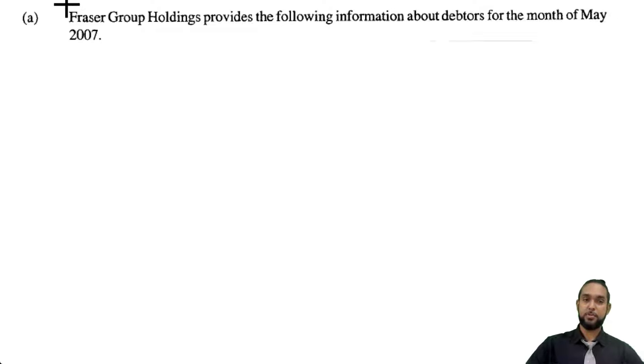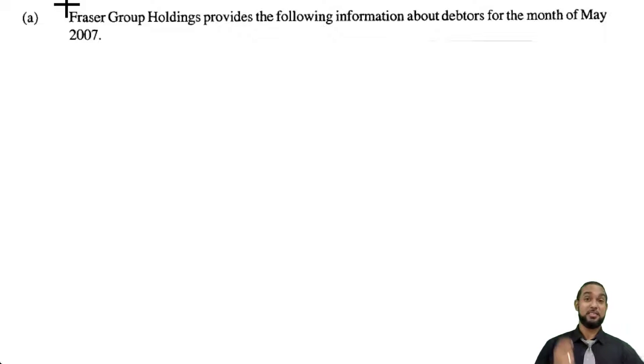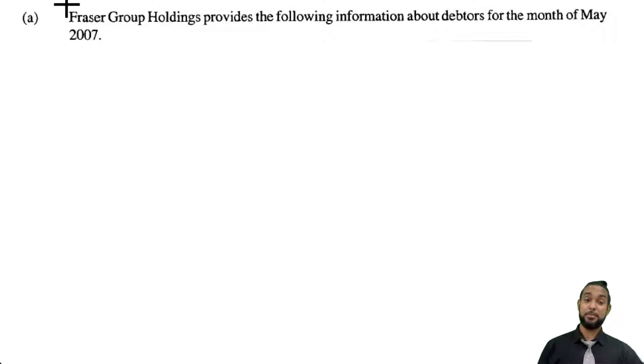Question 4 has three parts: A, B, and C. The first part is a control account, the second part is a payroll part, and the third part is manufacturing.